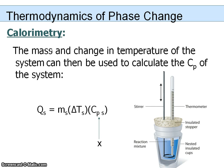If you know the mass of the substances you are reacting, and you know what temperature they were at and what temperature they ended up — so you know the change in temperature — you can then use that information, along with the energy given off by the system, to calculate the specific heat of the system.